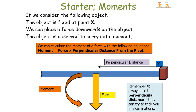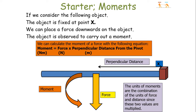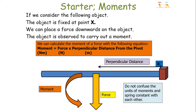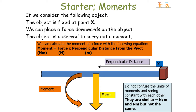We can put units into this equation. Force is measured in newtons and perpendicular distance is measured in metres, so the unit of moment is newton metres. Don't confuse the units of moments with the units of spring constant — one is newton per metre and one is newton metres. They are not the same units, so just be careful regarding that.